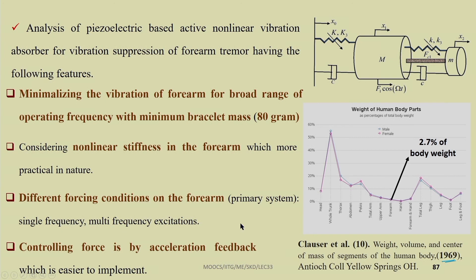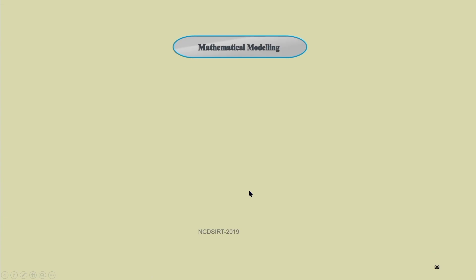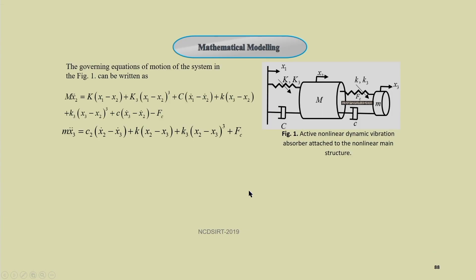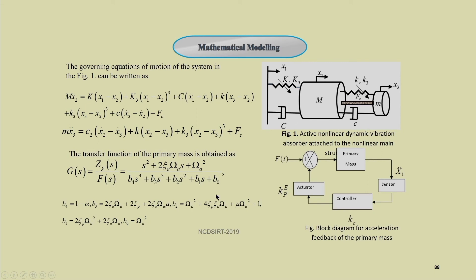Using only acceleration feedback, one can model the system as linear or non-linear. This is a torsional system. The equation of motion can be written with M (primary mass, i.e., the forearm or hand) as: MẌ₂ = k(X₁ − X₂) + k₃(X₁ − X₂)³ + c(Ẋ₁ − Ẋ₂) + k(X₃ − X₂) + k₃(X₃ − X₂)³ + c(Ẋ₃ − Ẋ₂) − F_c.